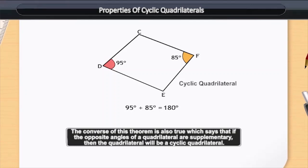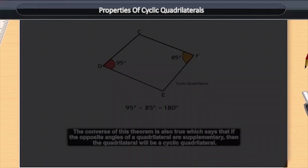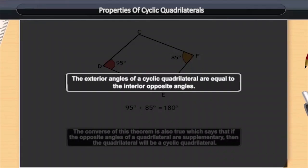Because these opposite angles are supplementary, therefore this quadrilateral is a cyclic quadrilateral. Now, we will discuss the second property of the cyclic quadrilateral, which tells us that the exterior angles of a cyclic quadrilateral are equal to the interior opposite angles.